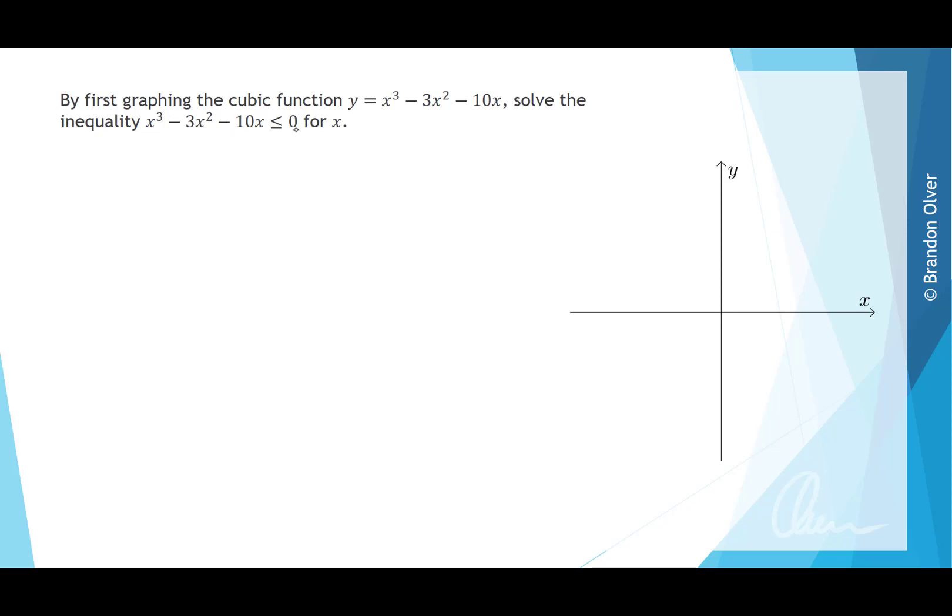So if we have a look at this being equal to 0 to start with, that's the same as finding the x-intercepts of the graph, and we do that by letting y equal 0. So we want to solve 0 equals x³ minus 3x² minus 10x.